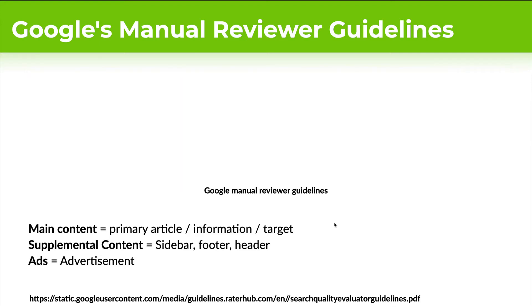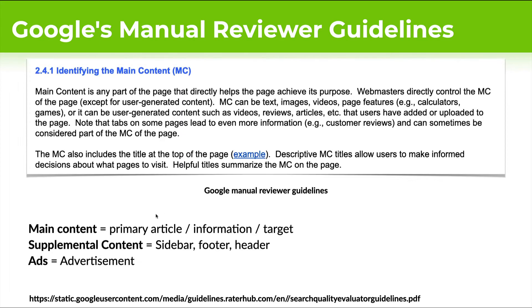Main content is typically going to be the primary article — whatever the information of the page is, essentially the main target. Supplementary content is defined as the sidebar, the footer, the header — everything that is not the main content. And then of course, ads are the advertisement. That's how Google breaks it down inside the manual reviewer guidelines.